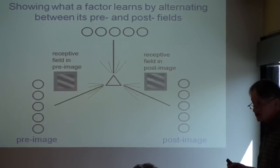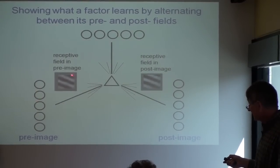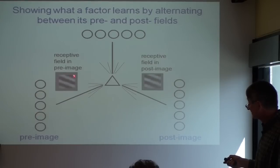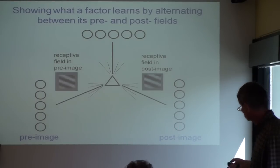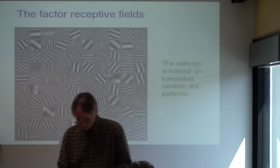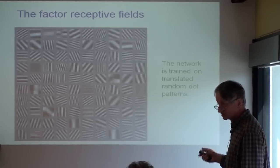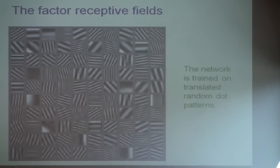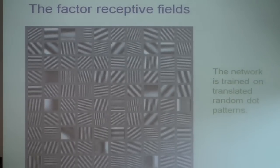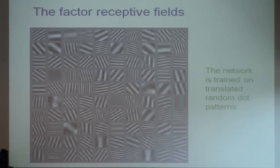If we look at what one of these factors does when shown random dot patterns that translate, we can look at the weights connecting it to the pre-image — a grating of weights where white is a big positive weight and black is a big negative weight. With 100 factors, those are the receptive fields of the factors in the pre-image, and here are the factors in the post-image. Remember it's looking at translating dots. It has basically learned the Fourier basis and learned to translate things by about 90 degrees. That's a very good way of handling translation. Mathematicians say the Fourier basis is the natural basis for modeling translation, and this model learned it.